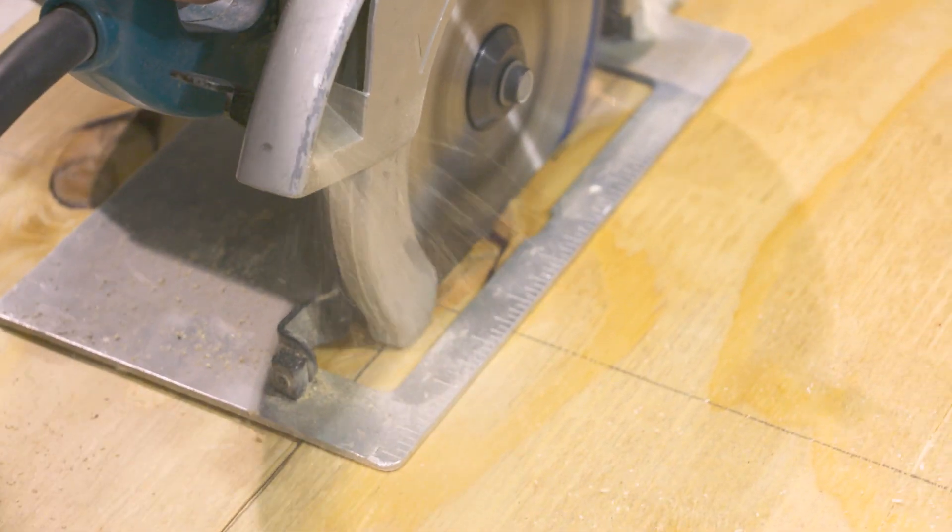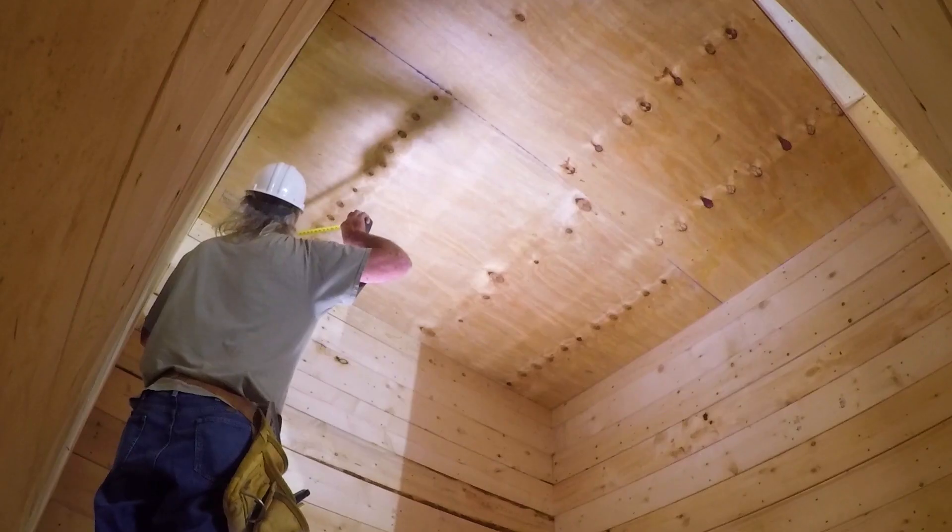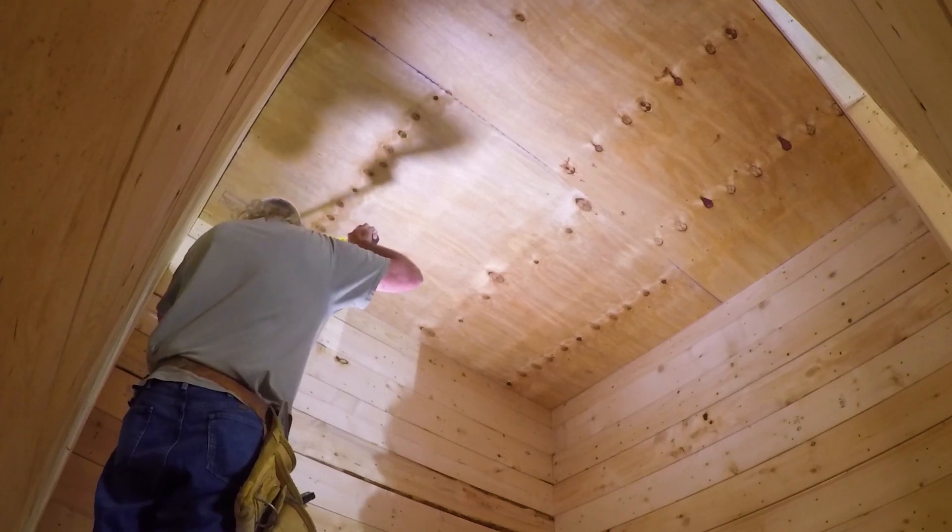Two 4' x 8' sheets of plywood are nailed to the exterior of each of the four walls, and two sheets are installed on the interior surface of each wall and the ceiling.